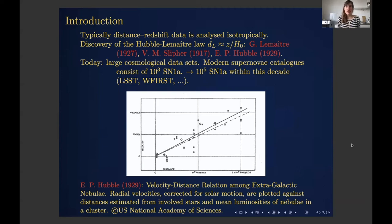He did a fit of a straight line to these data points, the slope of which we today identify as the Hubble parameter that goes into Hubble's law, prescribing distances to nearby sources in an expanding universe. The reason Hubble used an isotropic analysis was perhaps not that he thought the universe was particularly homogeneous or isotropic, but more from a practical standpoint — data was so sparse that it would be unrealistic to resolve any physical anisotropy.